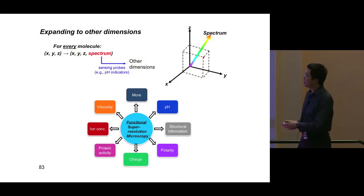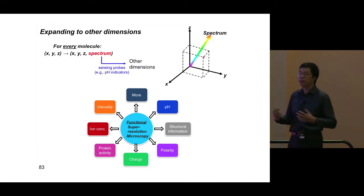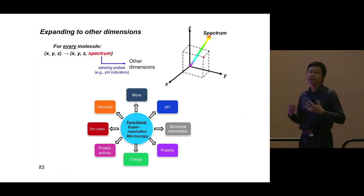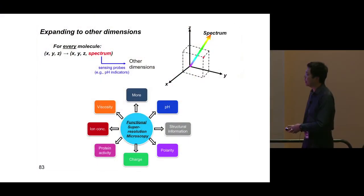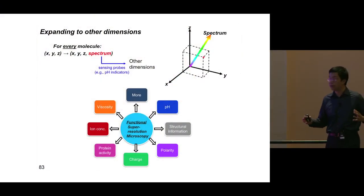Beyond multicolor imaging with four spectrally similar dyes, we are trying to convert this new spectral dimension into other functional dimensions. For example, pH indicators or other sensing probes can convert local information like pH into a color change. Because of that, we are transforming super-resolution microscopy — which traditionally gives only structural information — into what we call functional super-resolution microscopy, to probe information like pH using pH indicators, polarity using polarity-sensing probes, and also charge and protein activity inside live cells.